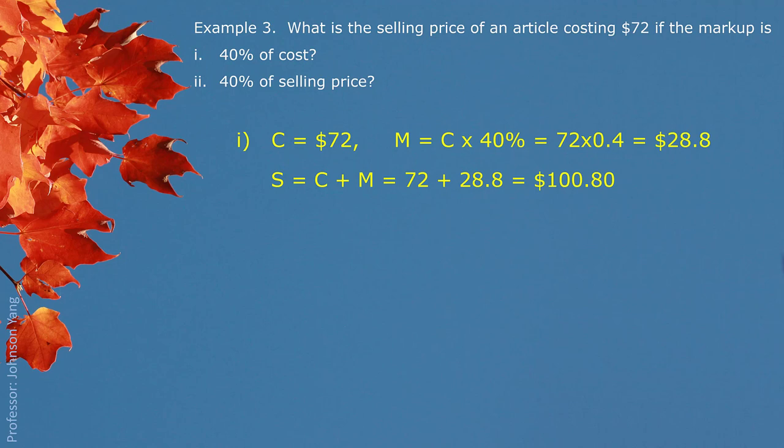Second condition: if the markup is 40% of the selling price, our foundation changed. We still have cost of buying $72, and we have markup 40% of the selling price. We do not know selling price yet at this moment, so we simply label 0.4S. Then we put them together would be the selling price.